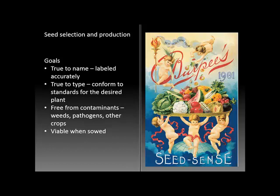The third goal of seed production is that the seeds are free from contaminants — weeds, disease, pathogens, and other crops. And finally, the seeds need to be viable and will produce healthy seedlings and plants when sown in the greenhouse or in the field.